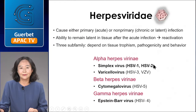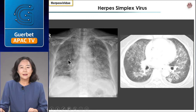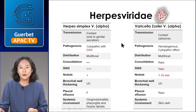Next is Herpesviridae, a double-stranded DNA virus with three sub-families depending on tropism, pathogenesis, and behavior. As cytopathic effects are a common pathogenesis of these families, immune-compromised hosts are vulnerable. Cytopathic effects with diffuse alveolar damage show diffuse ground-glass opacity on CT scans. This is a case of herpes simplex virus pneumonia. The chest radiograph shows diffuse subsegmental ground-glass opacity and consolidation. On CT scan, centrilobular nodules with a tree-in-bud pattern are shown diffusely.